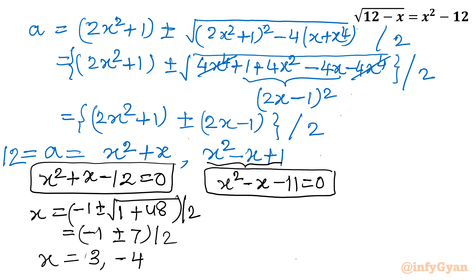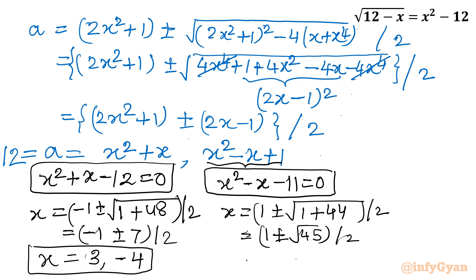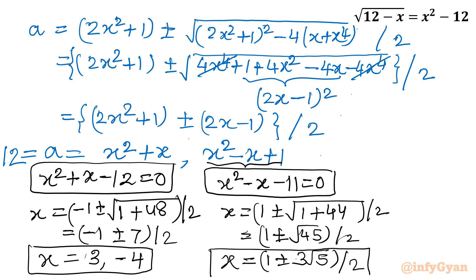We have to exclude extraneous solutions, which we will discuss a little later. For the second equation x squared minus x minus 11 equals 0: x equals 1 plus or minus square root of (1 plus 44) divided by 2, which is 1 plus or minus square root of 45, divided by 2. Since 45 equals 9 times 5, this gives 1 plus or minus 3 root 5, divided by 2. So we have four solutions total.